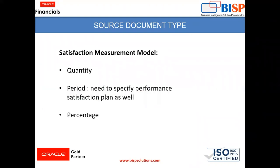What is satisfaction measurement module? There are three types: quantity, period, and percentage. It depends upon the organization's practice which model needs to be selected. For example, for goods the satisfaction measurement can be in quantity, and for services it can be in percentage of completion.